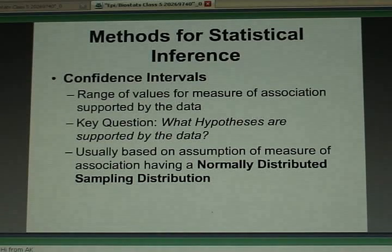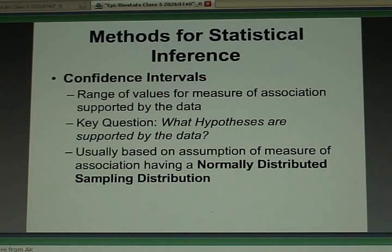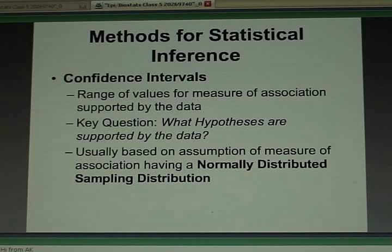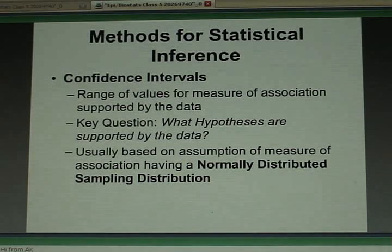But it also might be very supportive, not only of the statement risk ratio equals 0.5, but also of the statement risk ratio equals 0.6 or risk ratio equals 0.4. What the confidence interval is going to tell you is what statements about the true value of your risk ratio are being supported by your data.